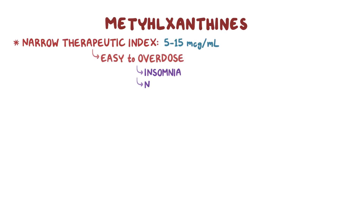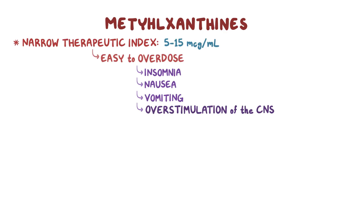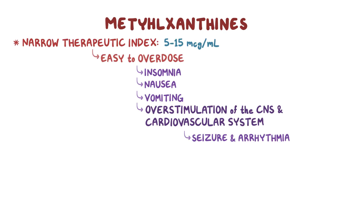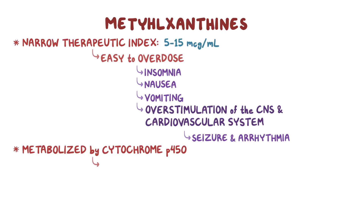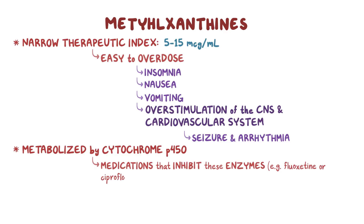Overdose could cause insomnia, nausea, and vomiting, but the most dangerous side effects include overstimulation of the central nervous system and cardiovascular system, leading to seizure and arrhythmia. Since methylxanthines are metabolized by a class of liver enzymes called cytochrome P450, medications that inhibit these enzymes — like fluoxetine or ciprofloxacin — should be avoided. Due to the dangerous side effects, theophylline is now rarely used.